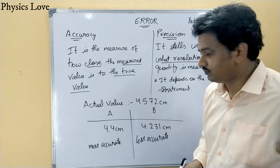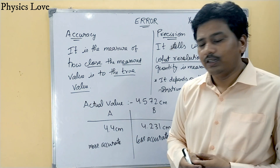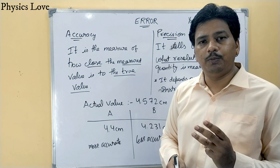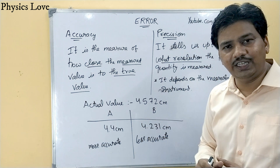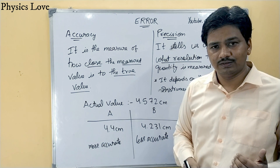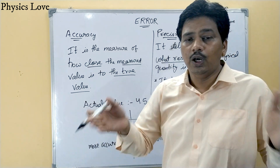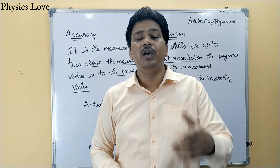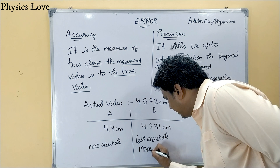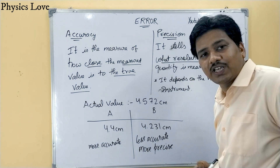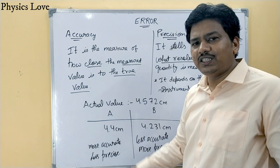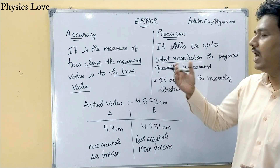Now let us talk about precision. 4.4 cm is measured up to one decimal place and 4.231 cm is measured up to three decimal places. The more decimal places, the more precise the measurement. So instrument B's result is more precise, and instrument A's result is less precise. This is the key difference between accuracy and precision.